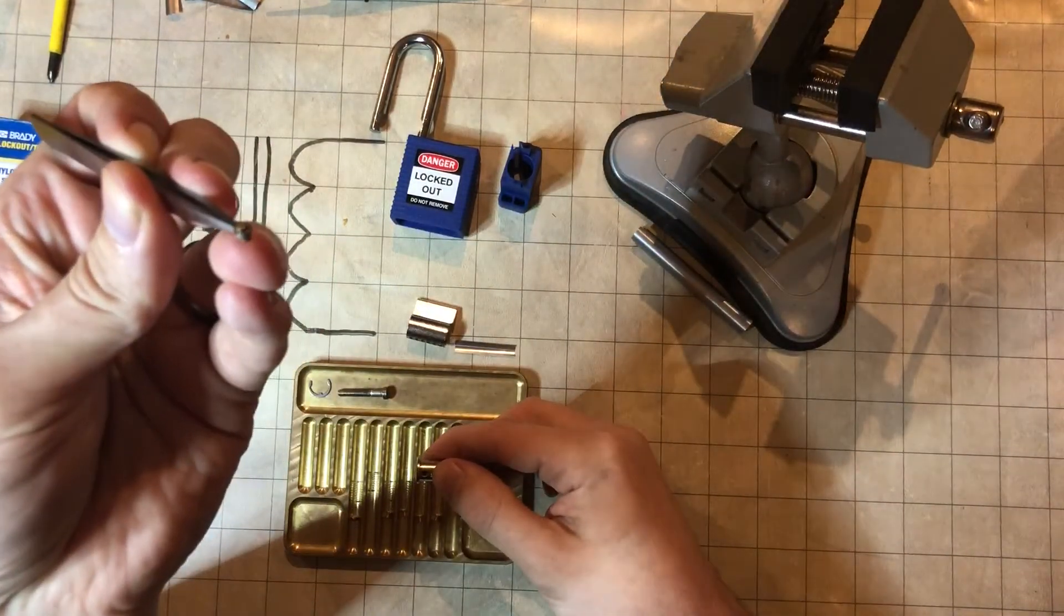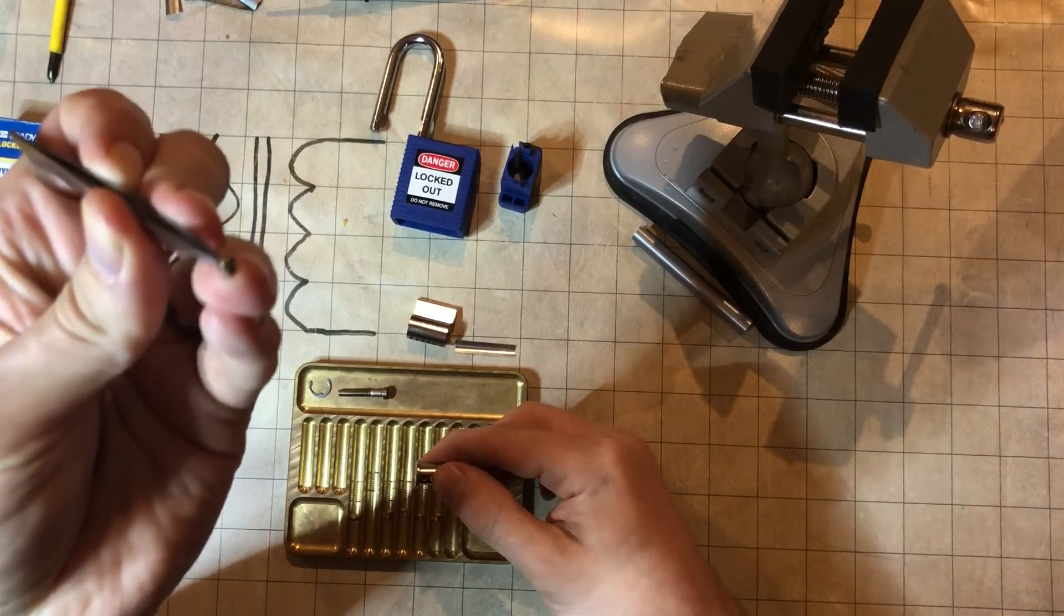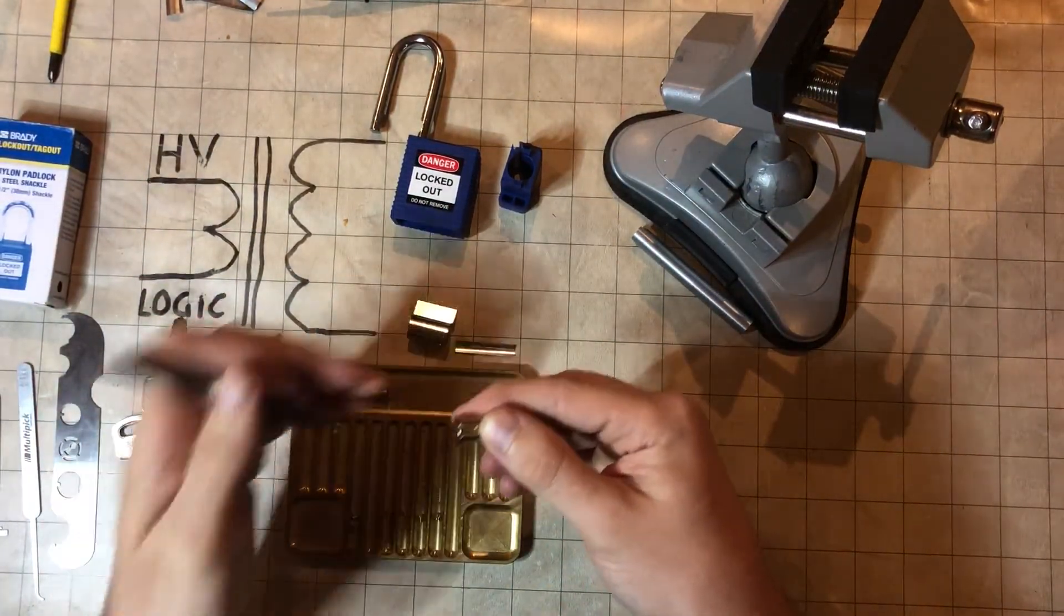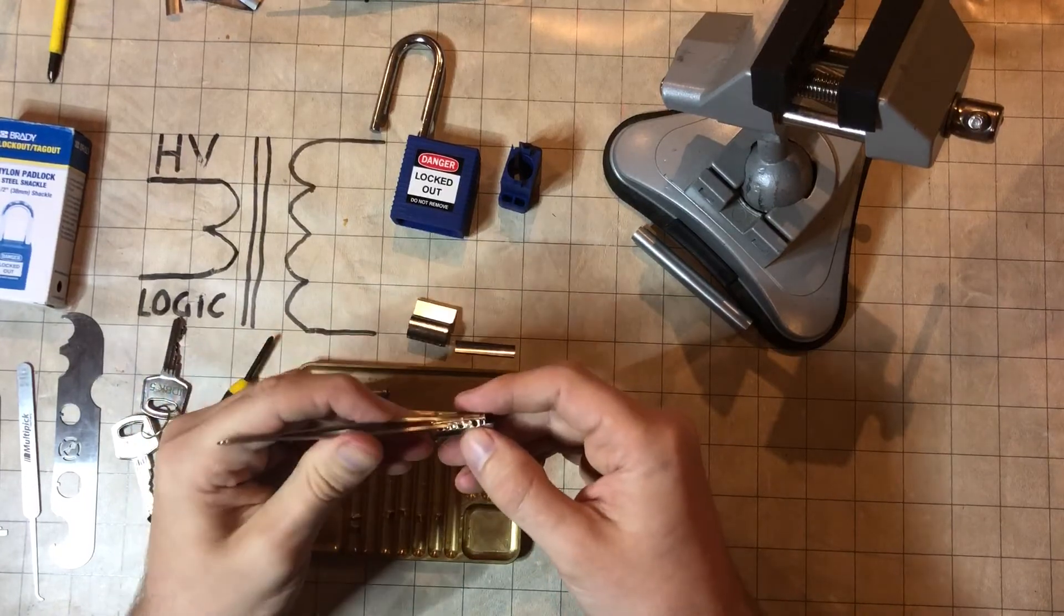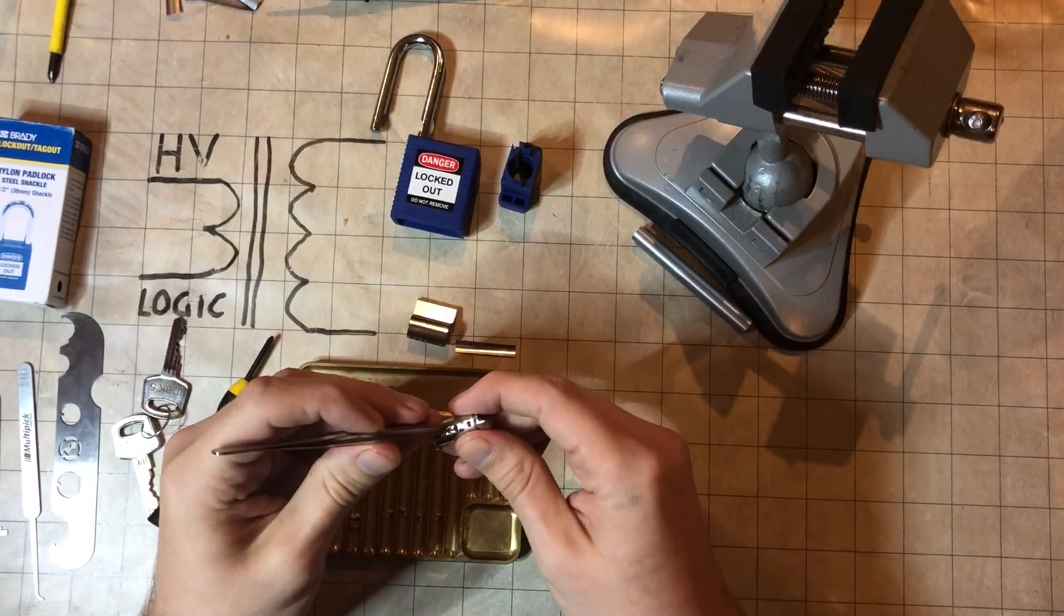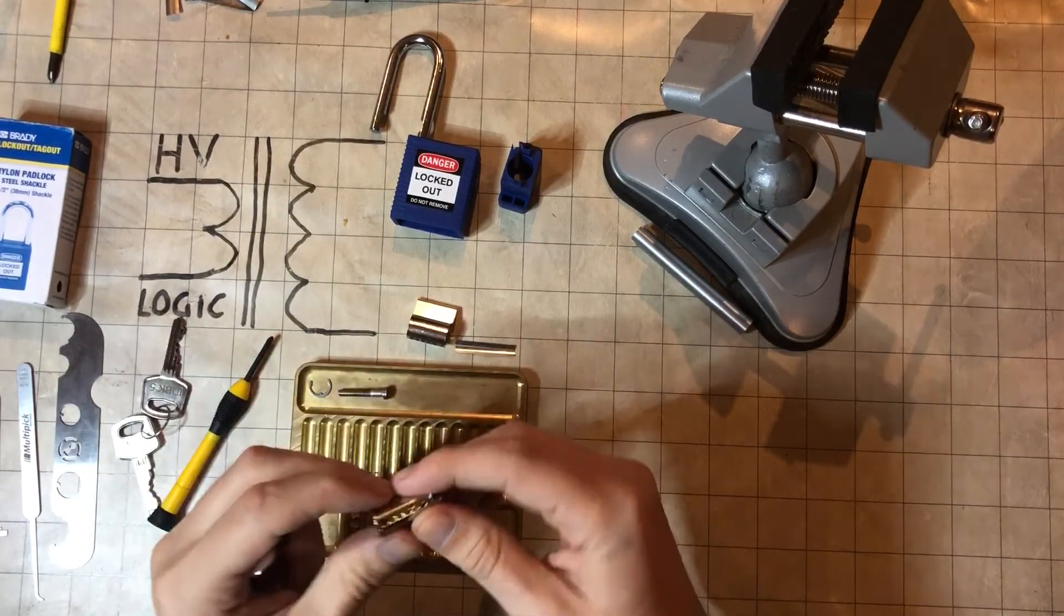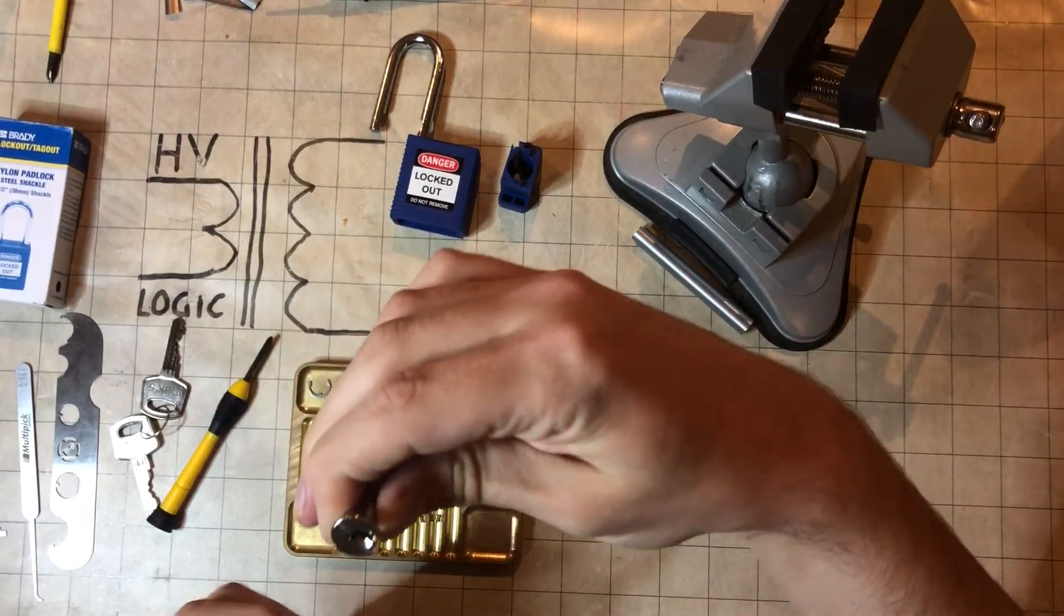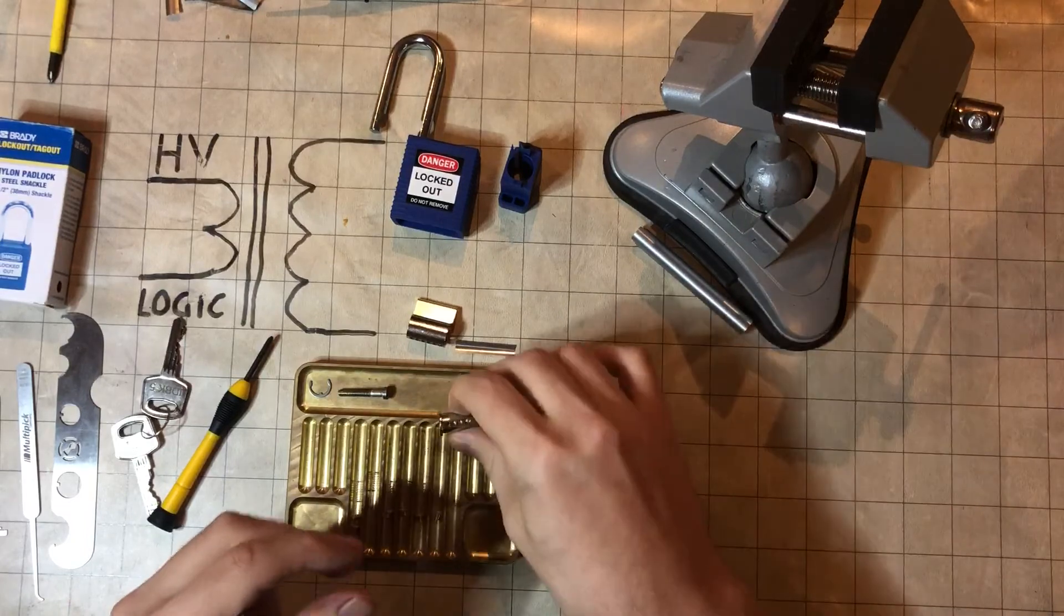You know, if that was another half a millimeter longer, that would not be sitting at the shear line and you would still have to pick it. The same goes for this one. That's a bit of a disappointment with these that they fit in like that. But anyway, this is what it is.